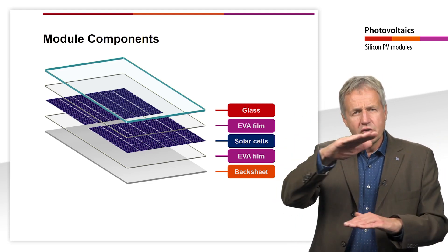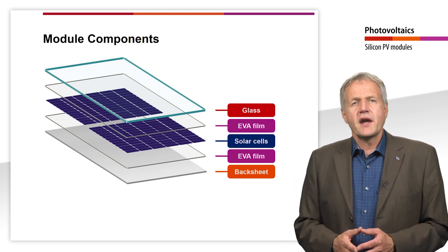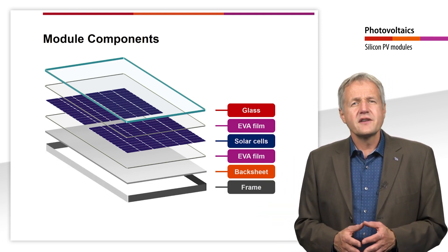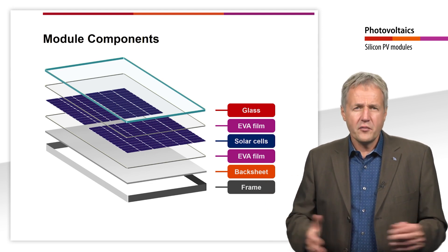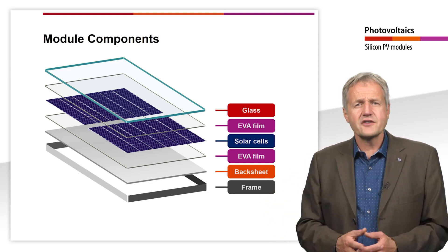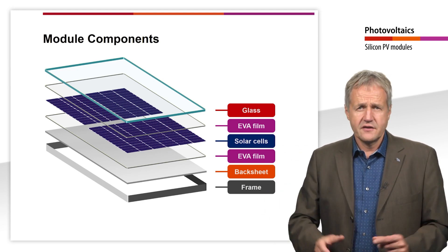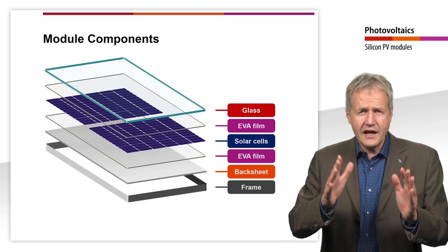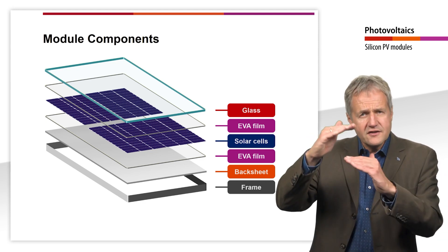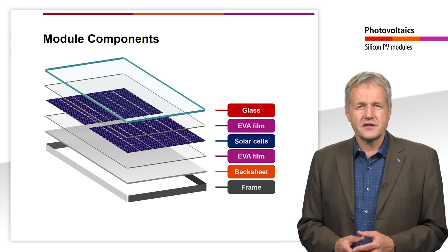Finally, the module is enclosed in a frame, which is usually made of aluminum. The frame increases the rigidity of the module, serves to fix the module to the substructure, and also protects the edges. The space between the glass pane and the frame is usually sealed with silicone or a rubber band.